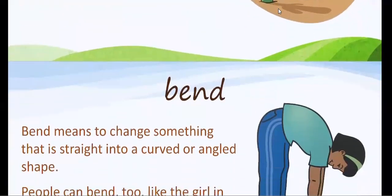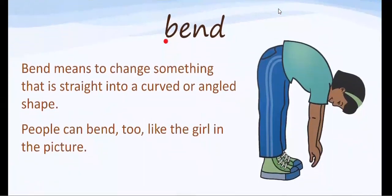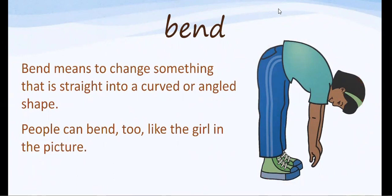Our next word is the word bend. Bend means to change something that is straight into a curved or angled shape. People can bend too, like the girl in the picture bending over. Think of it also how you bend a straw. Let's say the word together: bend.